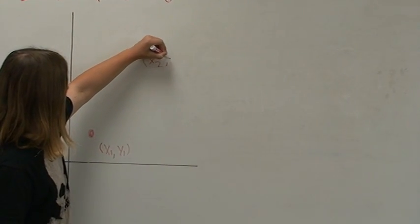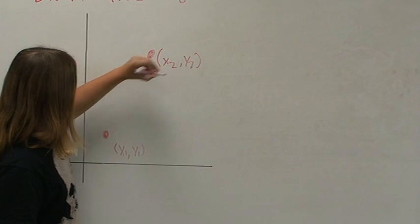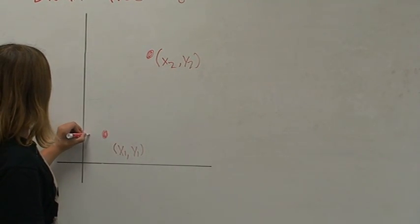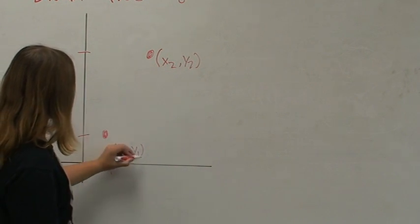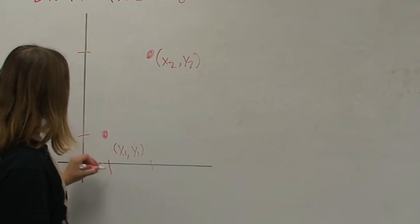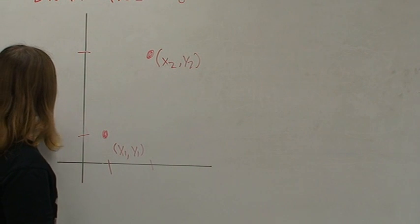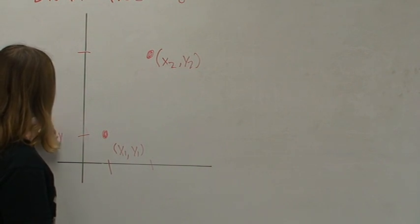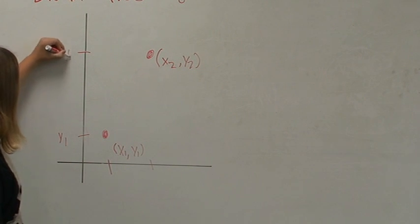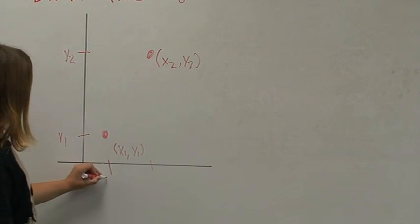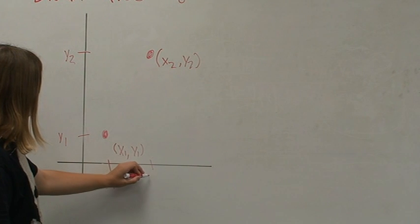After we have our two points, we then want to give the corresponding sides on the axis. So this is the y-axis, and this is the x-axis. The first point on the y-axis will be y1, and the second point will be y2. The first point on the x-axis is x1, the second point is x2.